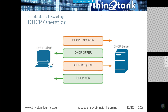Here's the four-step DORA process. D is the Discover — a broadcast from a host saying 'I need address information, is there anyone who can provide it?' O is the Offer — the server saying 'I have this to offer: this IP, this mask, this gateway.' R is the Request — the client going back to the server saying 'I want what you offered, please officially assign it to me.' A is the Acknowledgement — the server saying 'go ahead and start using that address.'